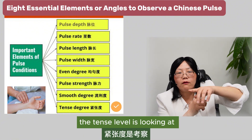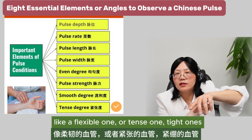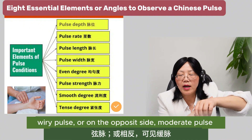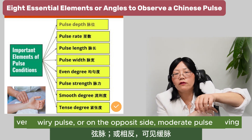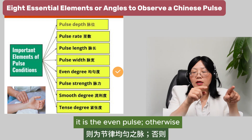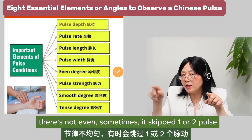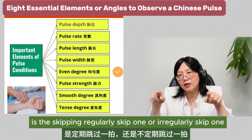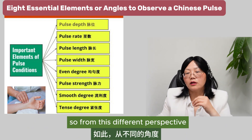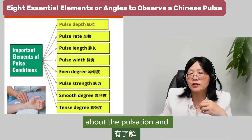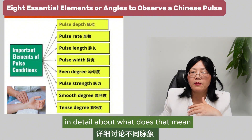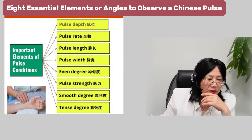The tense level looks at the blood vessel — whether it's a regular flexible one or a tight, contracted one. You might find a tight pulse, wiry pulse, or on the opposite side, a moderate or very soft pulse. For even degree, you look at whether the intervals between beats are the same. If equal, it is an even pulse. Otherwise, the pulse may skip one or two beats, either regularly or irregularly.